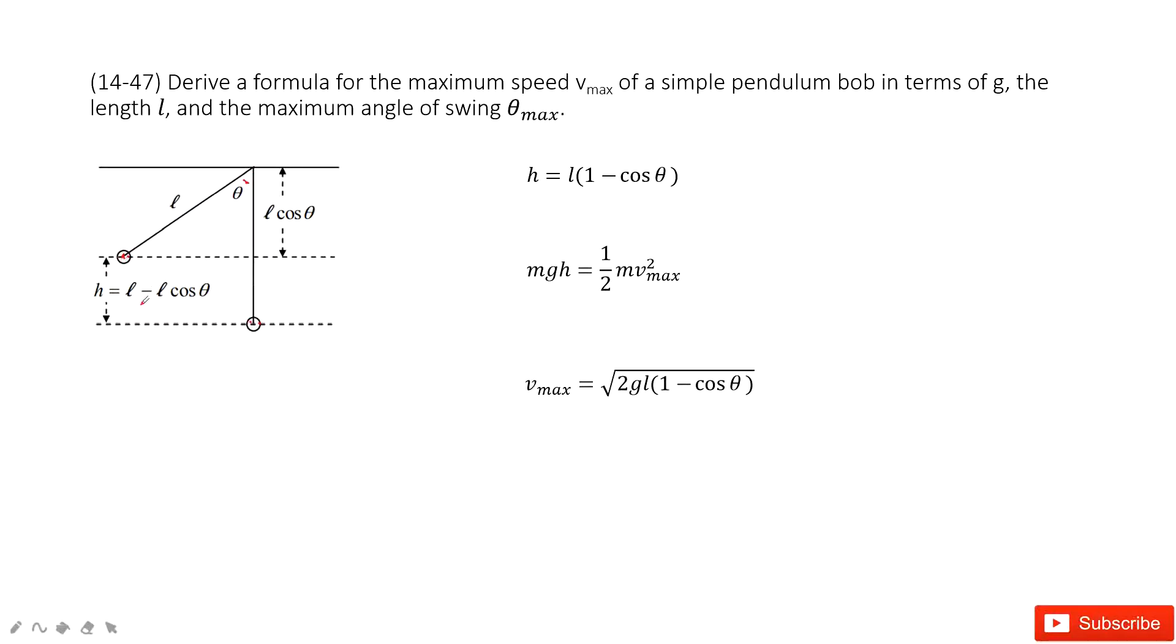In the vertical direction, it moves h. This h is l minus l cosine theta. Why? Because the total length is l, and this length is l cosine theta. So h equals l minus l cosine theta.